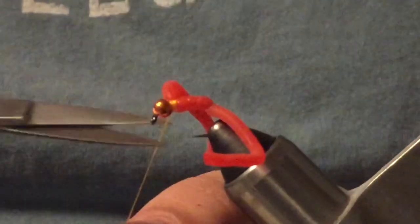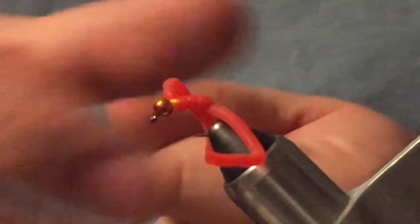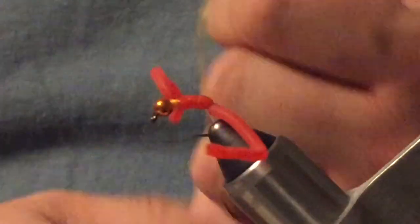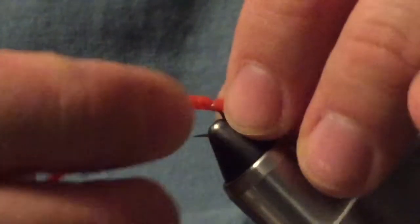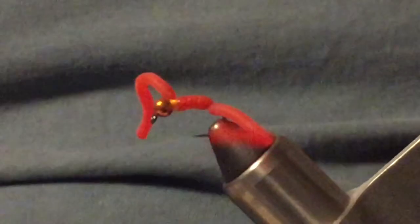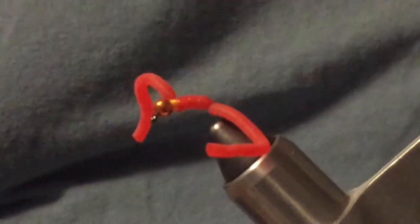Once you get that in there, cut your thread back. You can kind of play around with these if you want to move around a lot in water. That's what you got. That's our squirmy wormy 2.0.